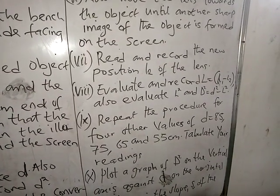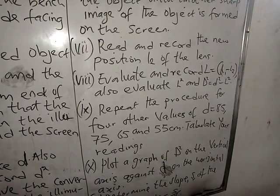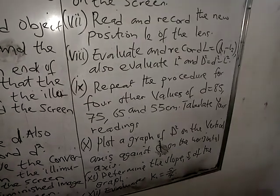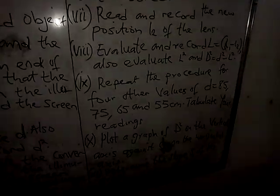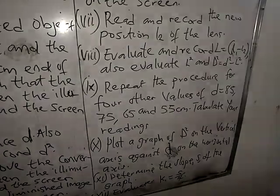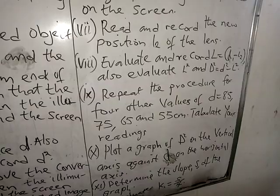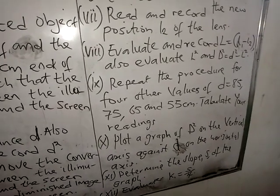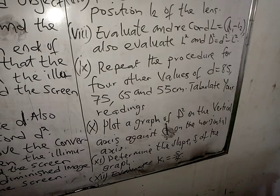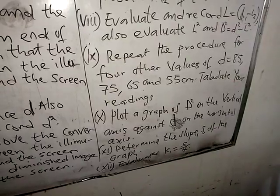Repeat the procedure for four other values of D equals 85, 75, 65, and 55 cm. Tabulate your readings. Plot a graph of D squared on the vertical axis against d squared on the horizontal axis — note we are plotting capital D squared against small d squared. Then determine the slope S of the graph, and finally evaluate k equals S over 4.